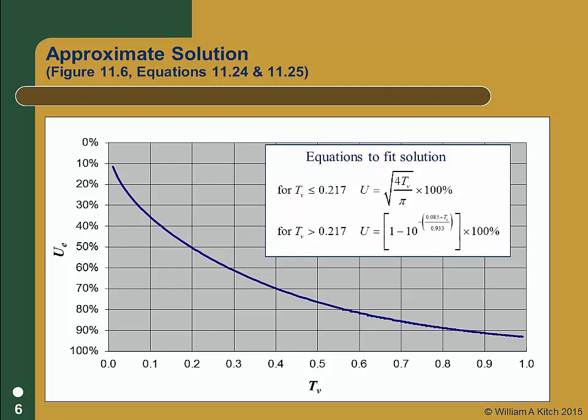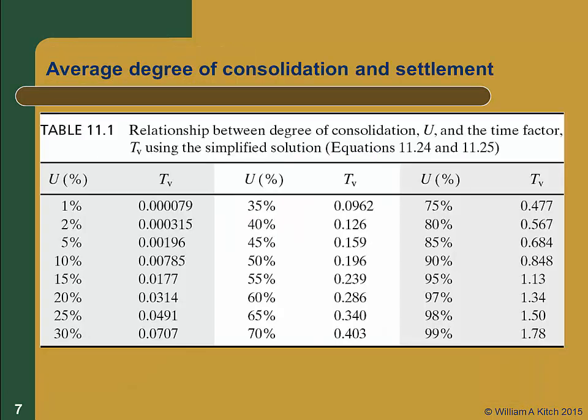This graph shows the relationship between degree of consolidation and the time factor T_v, along with two equations that have been fit to the solution. So we can use either this graph or the equations to compute the degree of consolidation vs. the time factor. This graph is presented in your text as Figure 11.6 and the equations are 11.24 and 11.25. This same information is also presented in tabular form as Table 11.1. We can use either Figure 11.6, Equations 11.24 and 11.25, or Table 11.1 to determine the simplified average degree of consolidation, and then compute the consolidation settlement delta_C as U times delta_C ultimate.